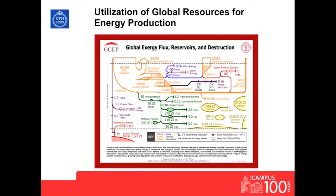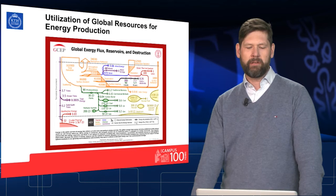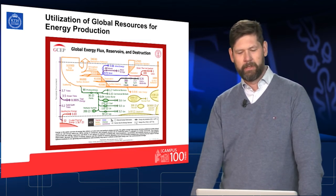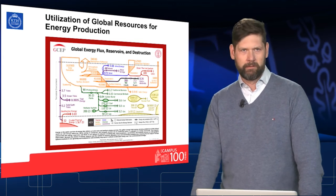We can see that 90 terawatt come from photosynthesis through the conversion of solar energy. On the other hand, we see that there is a much larger amount of solar energy entering the Earth — it is about 162,000 terawatt. Now, wouldn't it be good to use that energy directly?